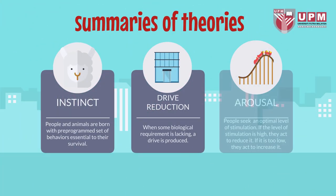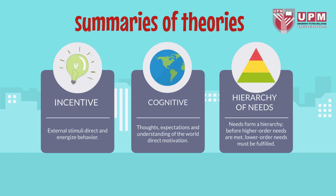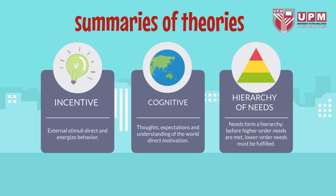Summary of motivation theories: First, instinct — people and animals are born with a pre-programmed set of behaviors. Second, drive reduction — when some biological requirement is lacking, a drive is produced. Third, arousal — people seek an optimal level of stimulation. Fourth, incentive — external stimuli direct and energize behavior. Fifth, cognitive — it's thoughts, expectations, and understanding of the world. Sixth, hierarchy of needs — higher order and lower order needs must be fulfilled.